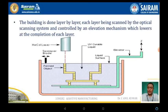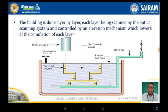The schematic diagram of the SLA process shows a bath containing an elevator that can be moved up and down by a motor. It also consists of a laser beam which cures the photopolymerizing liquid using either a UV-curable laser or UV light as the curing medium.